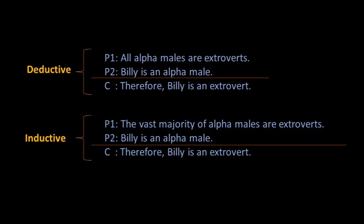For example: all alpha males are extroverts; Billy is an alpha male; therefore, Billy is an extrovert. Or another example: the vast majority of alpha males are extroverts; Billy is an alpha male; therefore, Billy is an extrovert. In the first example, the conclusion follows with strict necessity from the premises. If we assume that all alpha males are extroverts and that Billy is an alpha male, then it is impossible that Billy not be an extrovert, so we should interpret this argument as deductive. In the second example, the conclusion does not follow with strict necessity but does follow with some degree of probability, so it is best to interpret it as inductive.